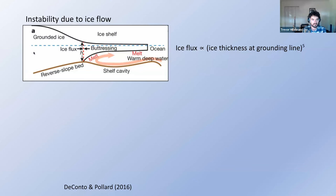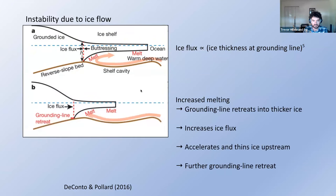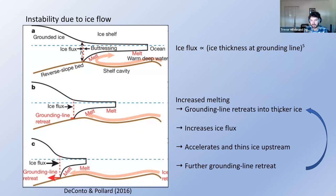In this cartoon, ice is flowing from left to right and goes afloat at the grounding line, floating off into the ocean as an ice shelf, which provides stabilizing back stress called buttressing to the ice upstream. Ice flux at the grounding line is proportional to ice thickness to a power of around five. As the oceans warm and melt the ice shelf, reducing buttressing, the grounding line retreats into thicker ice, leading to higher ice flux, acceleration, and thinning upstream, causing further grounding line retreat—a positive feedback. This very likely contributed to large-scale deglaciation of Antarctica in the geologic past and is contributing to sea level rise today.